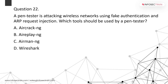A pen tester is attacking a wireless network using fake authentication and an ARP request has been injected. To perform a wireless attack on a Wi-Fi router, we use aircrack, airplay, and airmon. To generate fake traffic, fake authentication packets, and ARP request injection, we use Airplay-ng. Airplay-ng is used to generate fake authentication packets, replay, and perform ARP request injection.